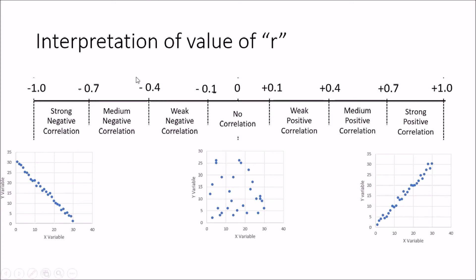There are also intermediate ranges. From minus 0.4 to minus 0.7 is medium negative correlation, and from minus 0.1 to minus 0.4 is weak negative correlation. From plus 0.1 to plus 0.4 is weak positive correlation, and plus 0.4 to plus 0.7 is medium positive correlation. Based on where r falls along this line, we can interpret what kind of relationship exists between the two variables.